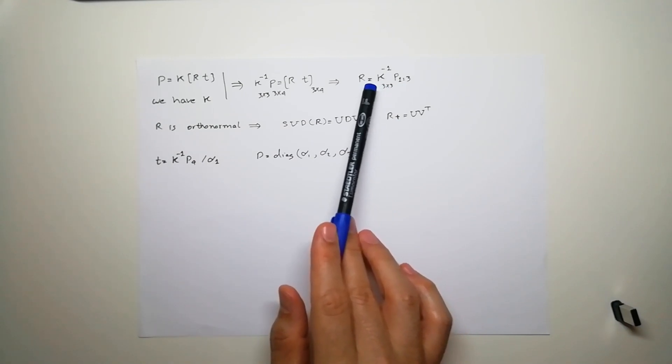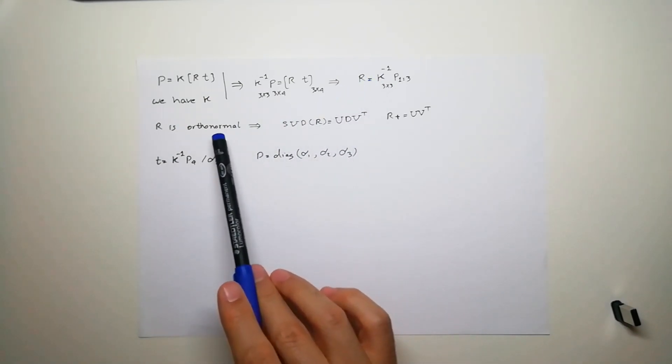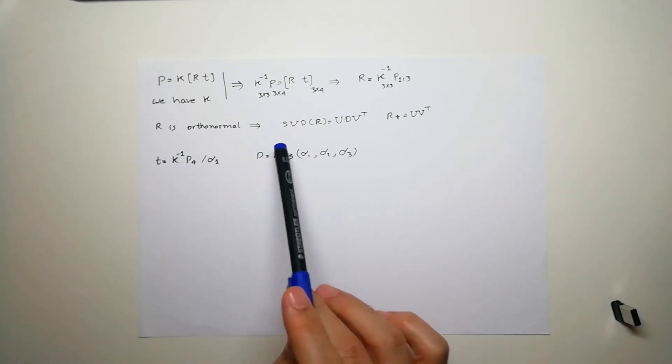The magnitude should be one. If you multiply it by itself it should be identity, and it's orthonormal. To enforce this orthonormality, we again compute the SVD of R.